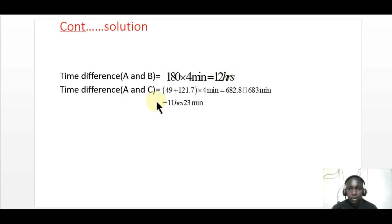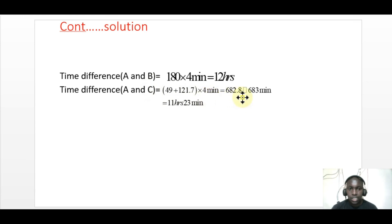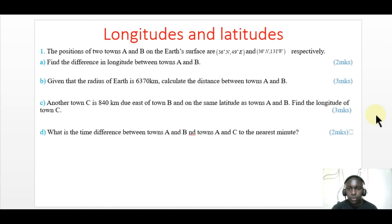For A and C: the longitude of A is 49 degrees and the longitude of C is 121.7 degrees. The difference is 49 plus 121.7, and when we multiply by 4 to convert to minutes, we get 682.8 minutes, which converts to 11 hours and 23 minutes. That is how we get the time difference using longitudes. Thank you so much.